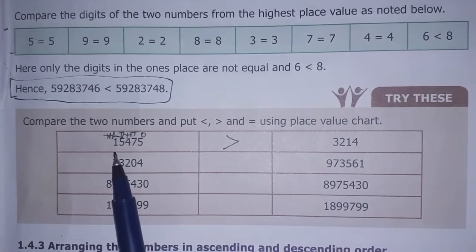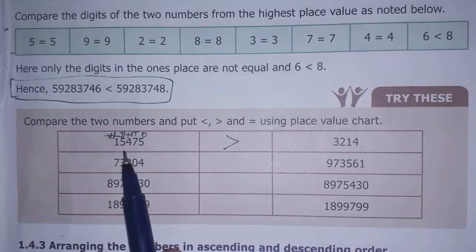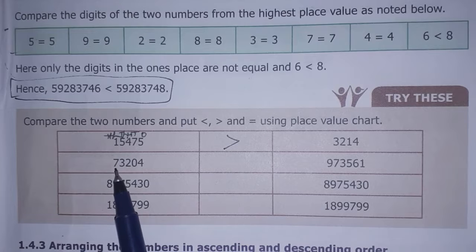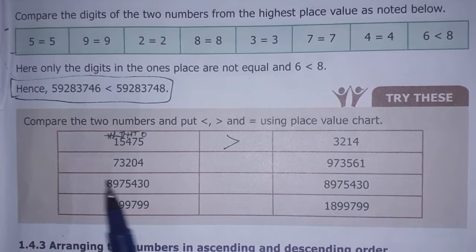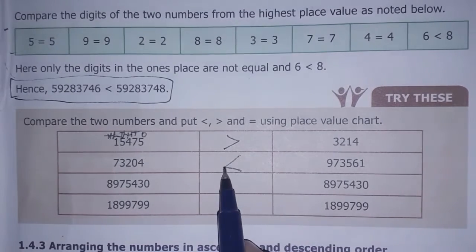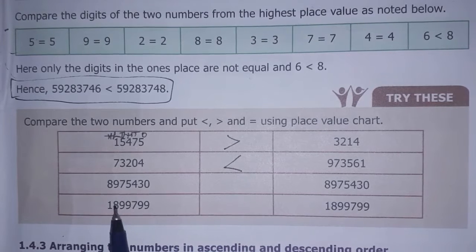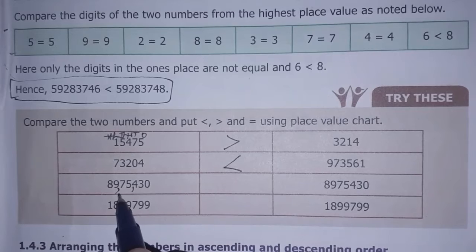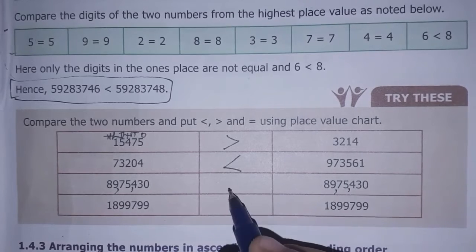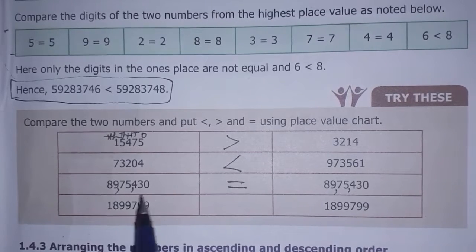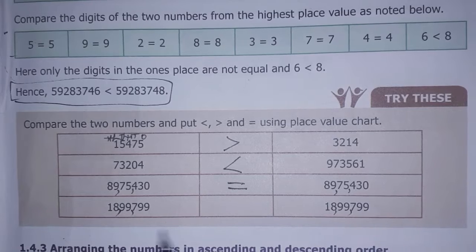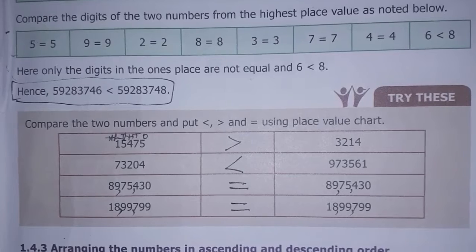When comparing the next number at the 10000s place, we compare digit by digit. There are 6-digit numbers here. The smaller number gets the less-than sign — mouth close. The larger gets the greater-than sign — mouth open. When the numbers are equal, like 8975430 and 8975430, we use the equal-to sign. Similarly, 1899799 compared to 1899799 is also equal. It is simple if you compare directly using place value.